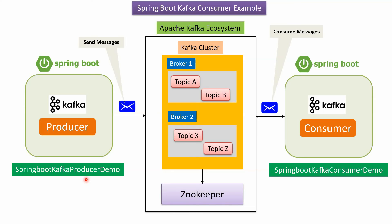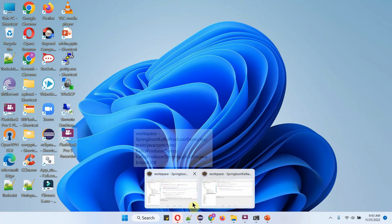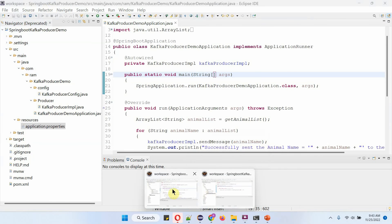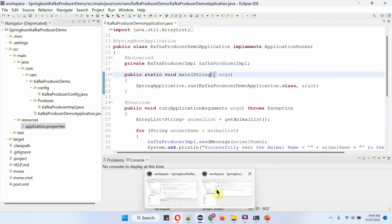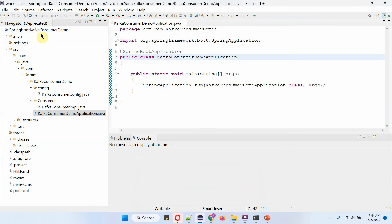Now I am going to run the Spring Boot Kafka Producer Demo application in one Eclipse instance, and using that I will send messages to the Kafka topic. In another Eclipse instance I am going to run the Spring Boot Kafka Consumer Demo application to consume messages from the Kafka topic. Here you can see two Eclipse instances: the first has the Spring Boot Kafka Producer Demo application, and the second has the Spring Boot Kafka Consumer Demo application. Now I am going to start the consumer demo application.